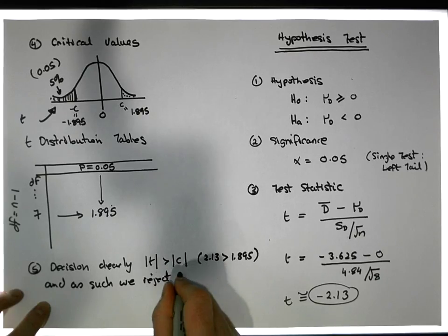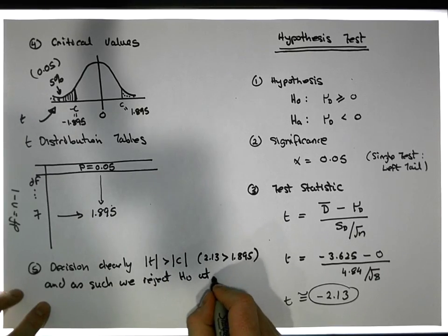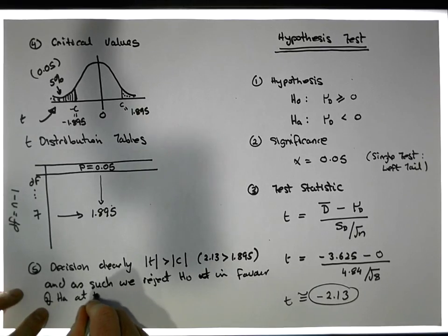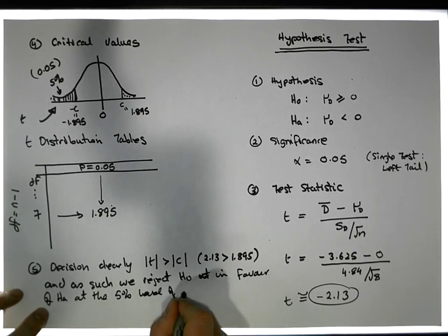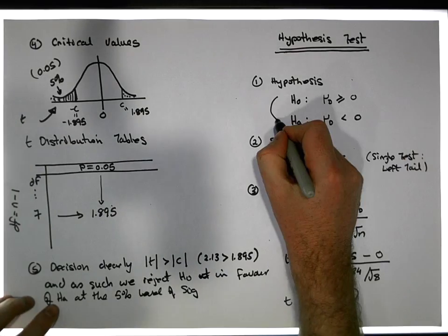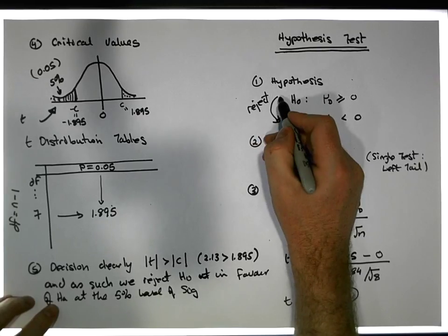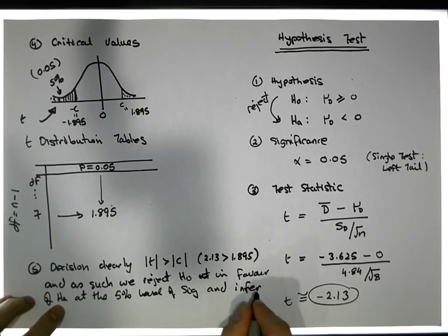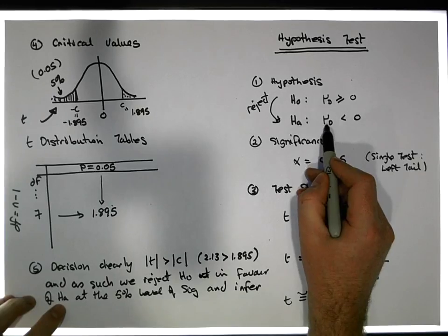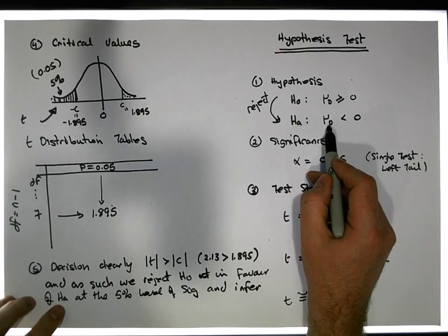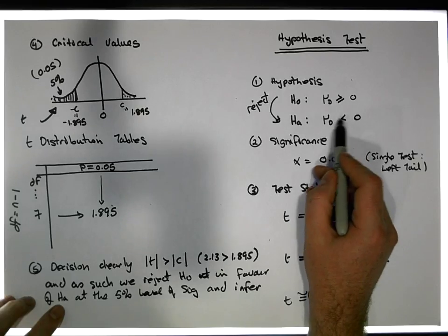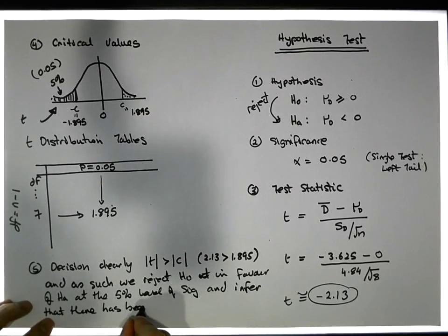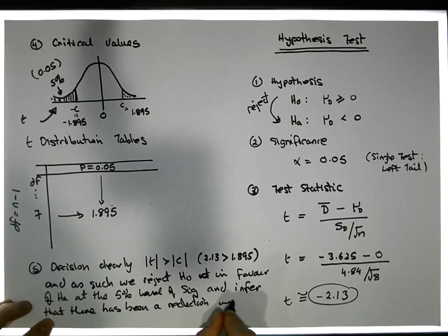We reject H0 in favor of Ha at the five percent level of significance. We make the inferential step and infer that the average of the population of differences between the before and after measure is less than zero, meaning they are negative.